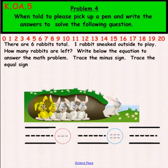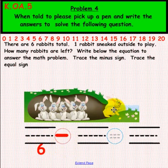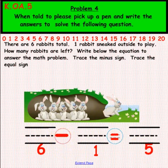Okay, let's count the rabbits: 1, 2, 3, 4, 5, 6. So your number should have been 6, and you said minus — how many are sneaking away? 1. One rabbit snuck away. So that should be equal to how many rabbits? 5. 6 minus 1 equals 5. If your answer matches ours, that is truly remarkable. Astonishing — way to go.